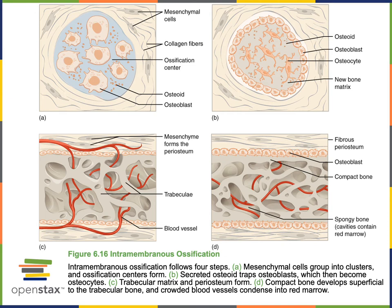During intramembranous ossification, connective tissue stem cells differentiate into osteogenic cells that form osteoblasts. During fetal development, there's a type of stem cell known as mesenchymal cells that can form a wide diversity of different connective tissue cell types. Mesenchymal cells differentiate to form osteogenic cells, and then those osteogenic cells further differentiate to produce osteoblasts. Osteoblasts then start to secrete osteoid — that is, the osteoblasts secrete collagen fibers producing the matrix of protein fibers that give the tensile strength and structure for bone.